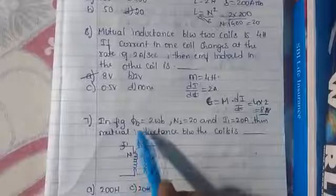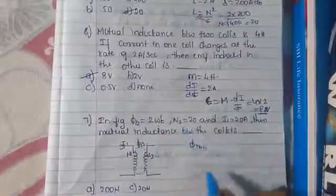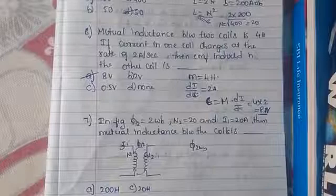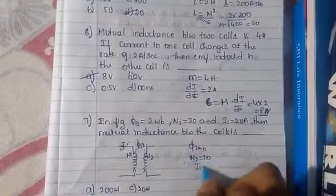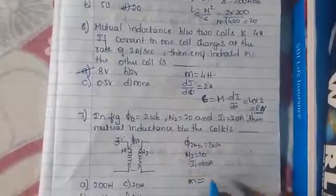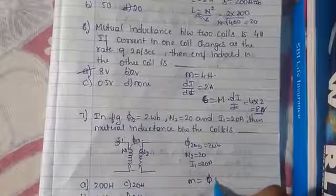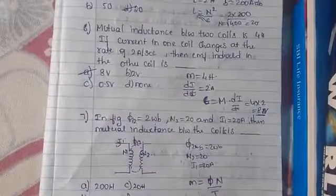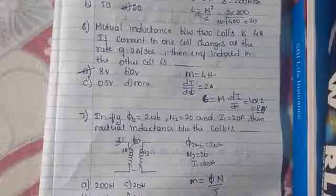Next question: flux φ = 2 Wb, N2 = 20 turns, I1 = 20 amps. Find the mutual inductance. Using M = N×φ / I = 20 × 2 / 20 = 2 Henry. Answer is 2 Henry.